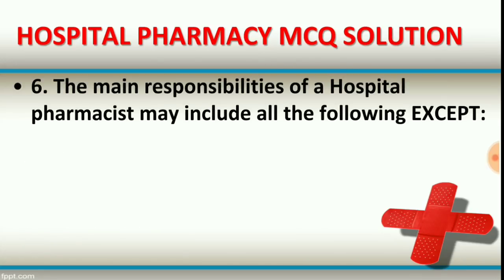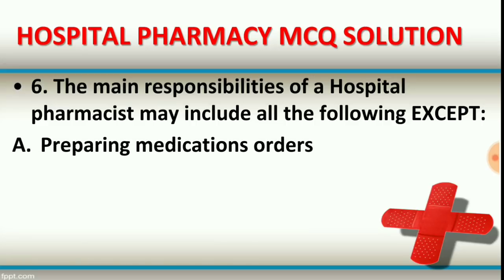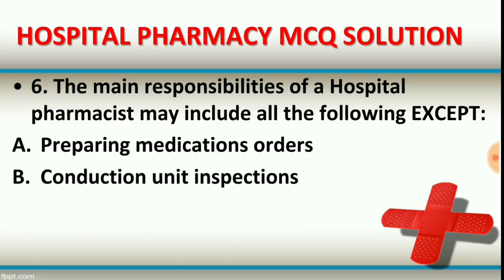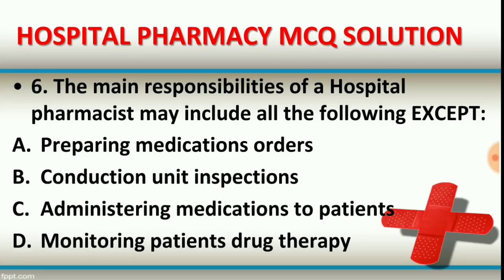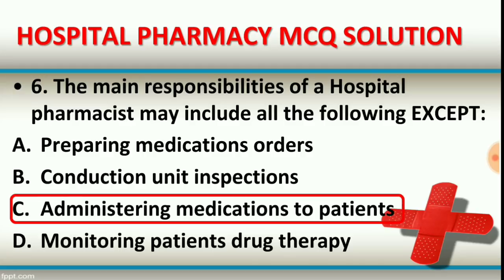Question number six: the main responsibility of a hospital pharmacist may include all of the following EXCEPT. Option A: preparing medication orders. Option B: conducting unit inspections. Option C: administering medication to patients. Option D: monitoring patients' drug therapy. The answer is option C. Administering medications to patients is the responsibility of nursing staff, not the hospital pharmacist. The pharmacist is responsible for preparing medication orders, conducting unit inspections, and monitoring drug therapy.